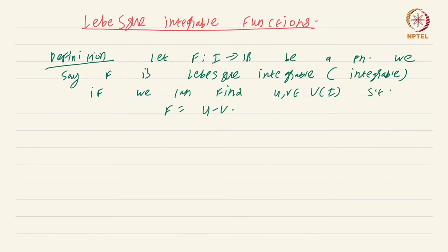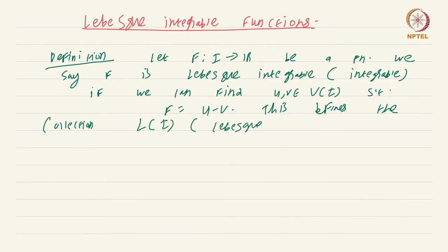So, this defines the collection L of I — the Lebesgue integrable functions. Of course, we have not yet defined what the integral of such a function is, but that is rather easy. We just define the integral of f over I, by definition, to be the integral of u over I minus the integral of v over I.